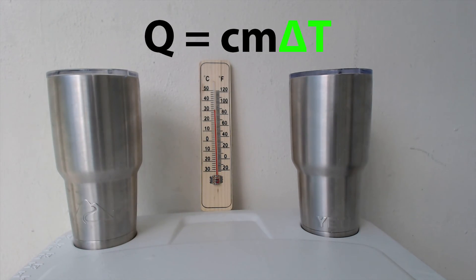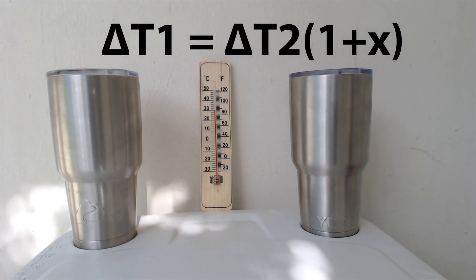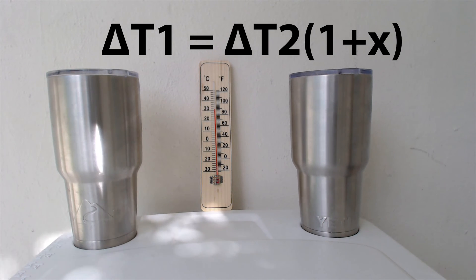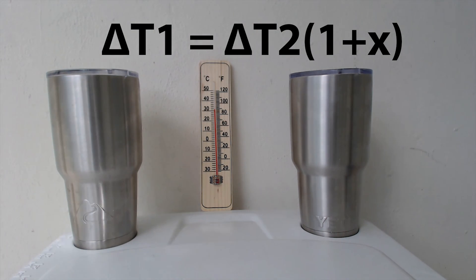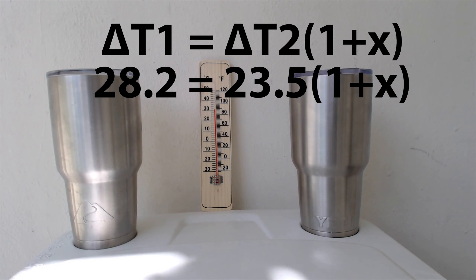So now we rearrange the equations for both of the tumblers and we set them equal to each other in order to see the efficiency difference between the two. That's the 1+x term that I added here. You'll see that the delta T1 and delta T2—that's the change in temperatures of both tumblers. The difference in the two tumblers, the numbers that I measured, was 28.2 degrees for the Yeti and 23.5 degrees total change from initial to the end of the four and a half hours. And then the 1+x is going to show the efficiency difference.